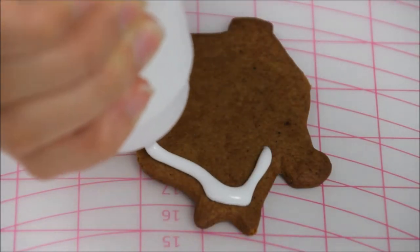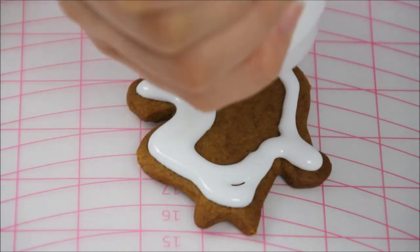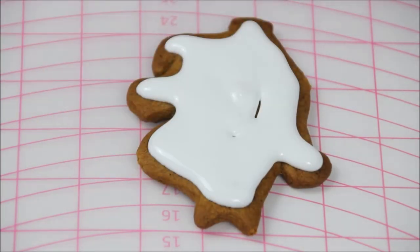With the moving cookie, also float the cookie with white royal icing first and then with the needle tool fill the edges.